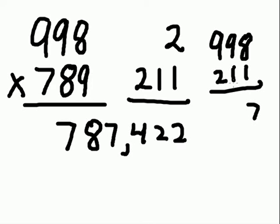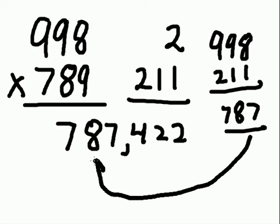998 take away 211: 8 take away 1 is 7, 9 take away 1 is 8, 9 take away 2 is 7. You're going to get the same answer. Oh, that's rich! That is truly rich.